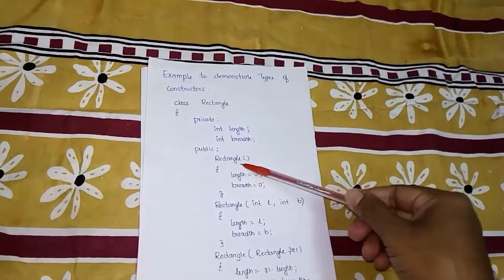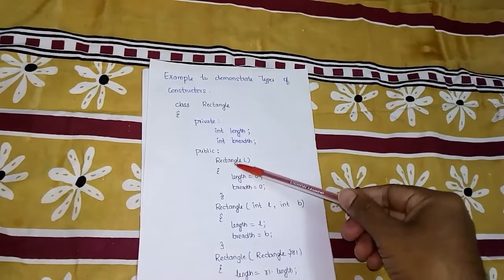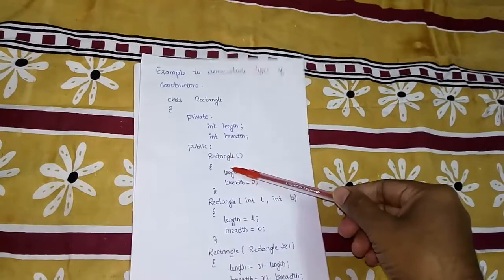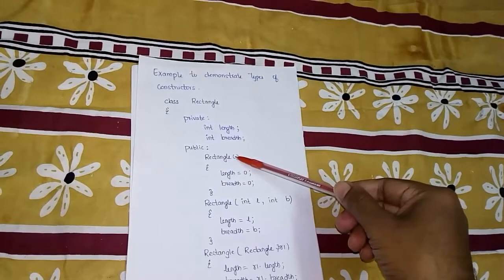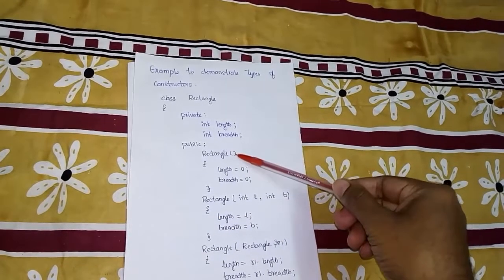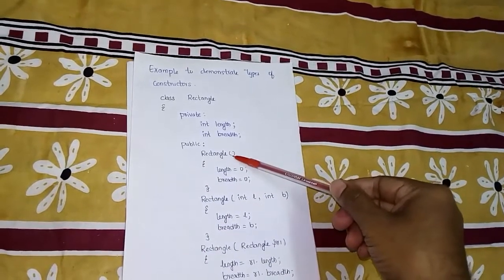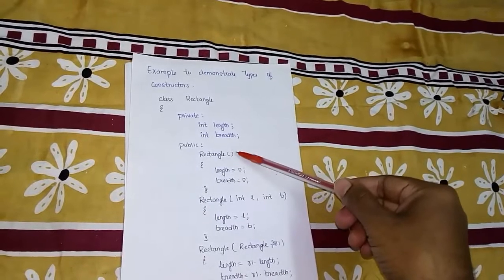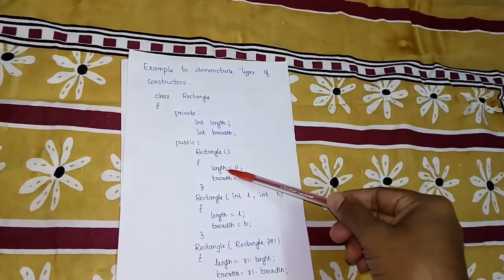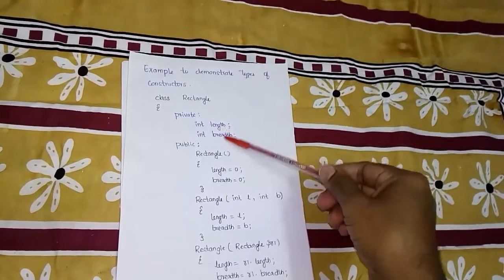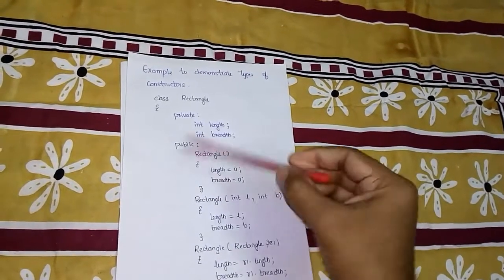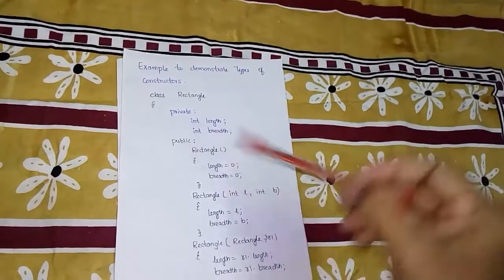In public mode, we write 'rectangle' — this is a function, but we call it a special member function because it has the name of the class, so we call it a constructor. We check whether it is a parameterized constructor or a default constructor. Since it does not have any arguments, we say this is a default constructor. Its purpose is to initialize the data members of the class — here we initialize length and breadth to 0.